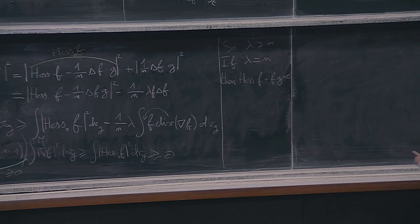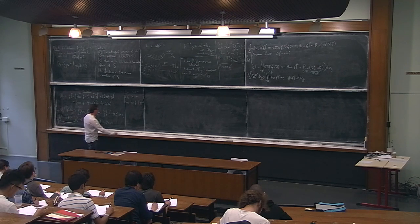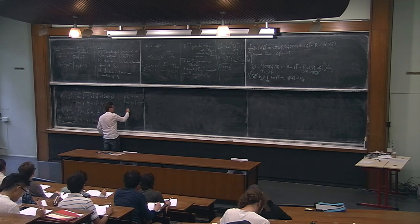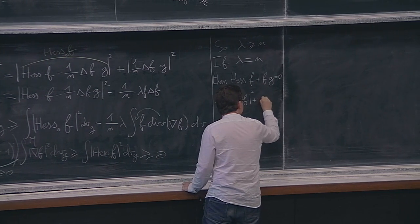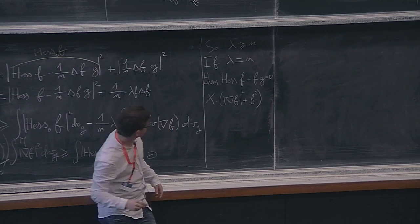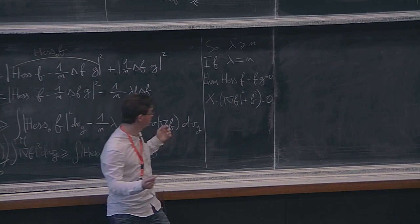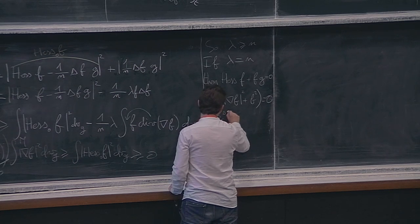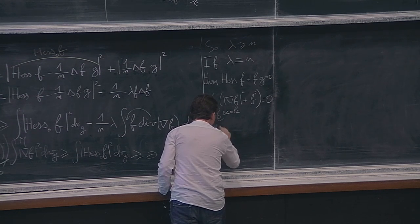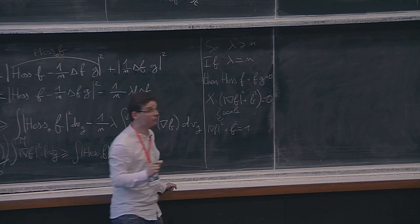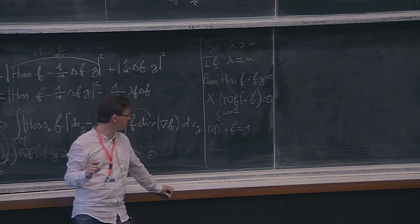That condition Hess f + f·g = 0 implies M is a sphere. If you compute the derivative of |∇f|² + f² in any direction, you get zero, so this quantity is constant. After scaling, we get |∇f|² + f² = 1.